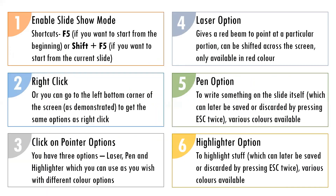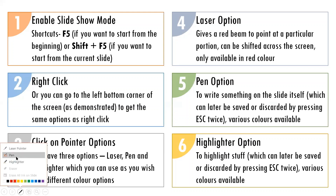Quick recap: the first and most important point is that you need to enable your presentation in slideshow mode. You can access pointer options in two ways — first, right-click and go to pointer options; second, move to the left bottom corner and click the third option, which gives you the same options for laser, pen, and highlighter. To erase, go to either the right-click menu or the left bottom corner. Lastly, you can save or discard all ink annotations by clicking the escape button twice.